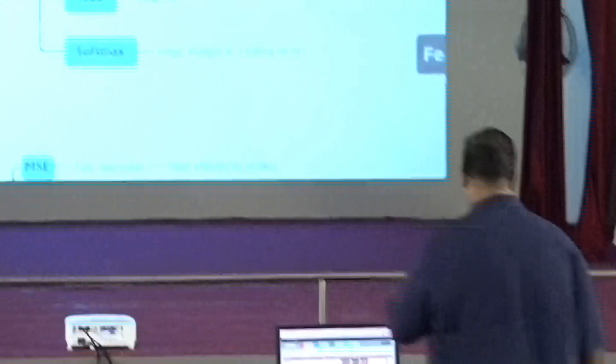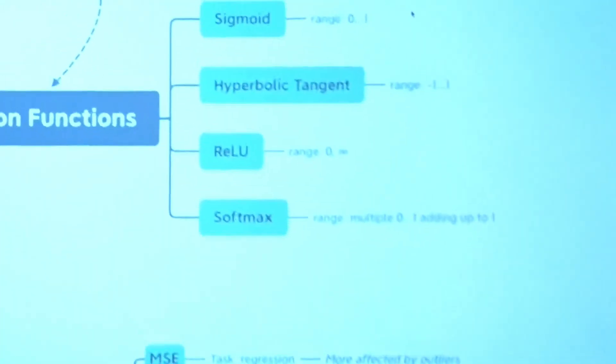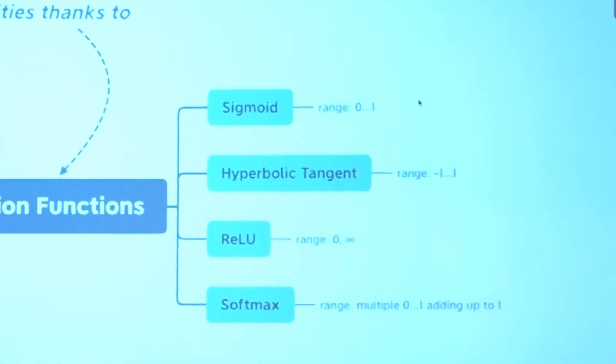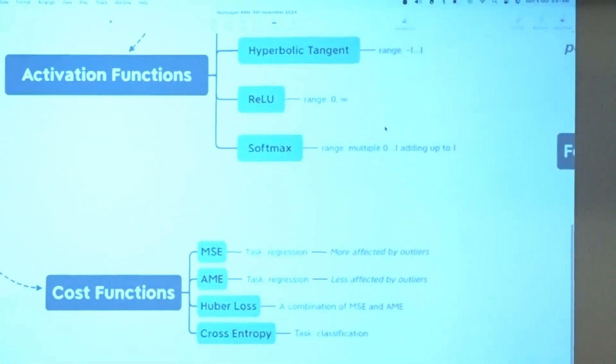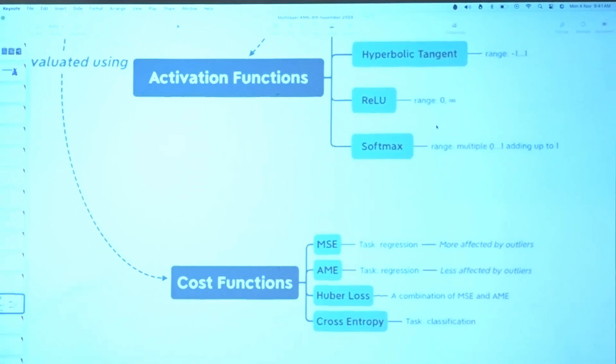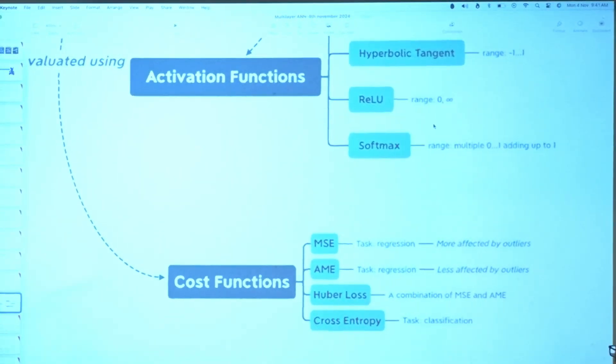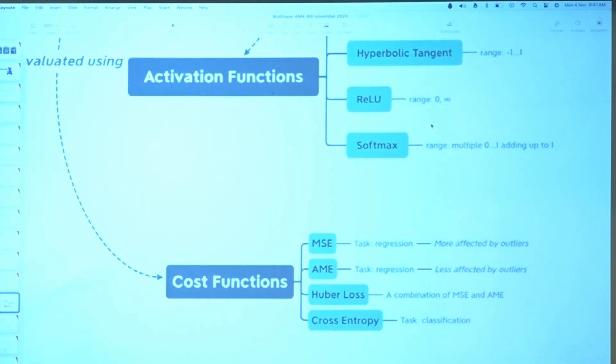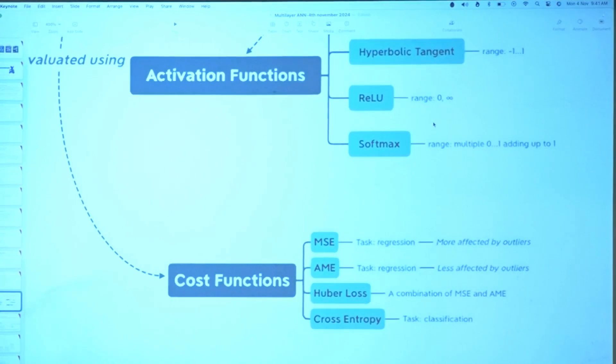Softmax is a combination of... we will learn today what is softmax. So this is what we learnt, then we learnt about how to calculate cost function. There are three versions you probably saw.